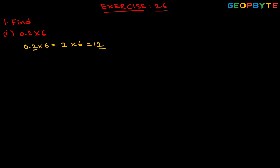The second way: we have 0.2 into 6. In order to remove the decimal point, I can divide using 10 — why 10? Because after the decimal point we are having only one digit. So it becomes 1 over 10 into 6, which equals 12 by 10. If we divide 12 by 10, we get 1.2. You can follow whichever method you feel easy. Next, second one.